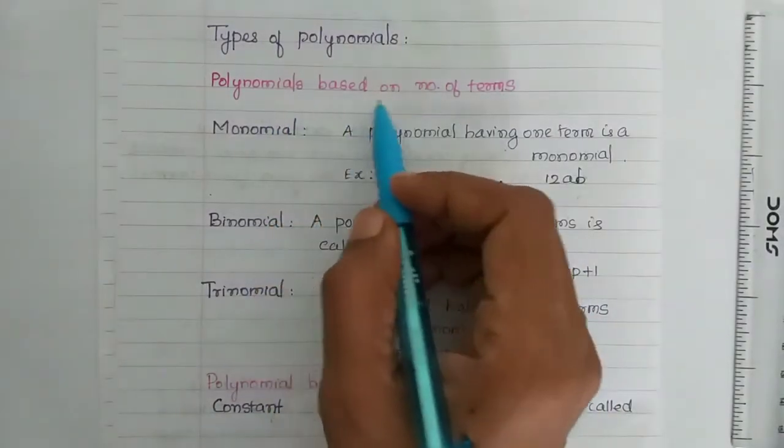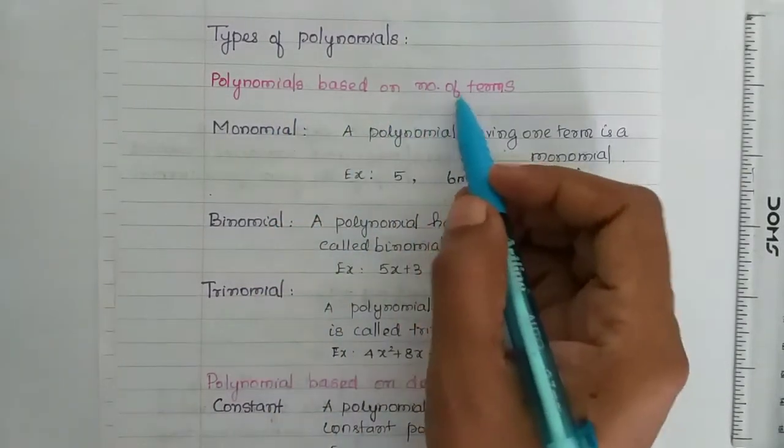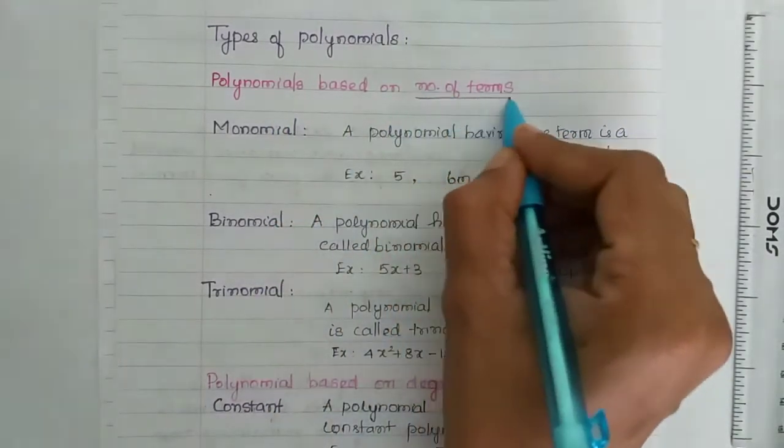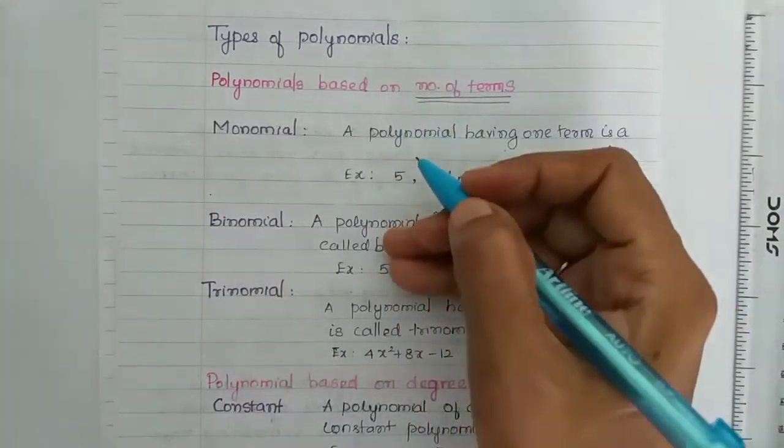Polynomials are based on number of terms. So, number of terms based on polynomial.